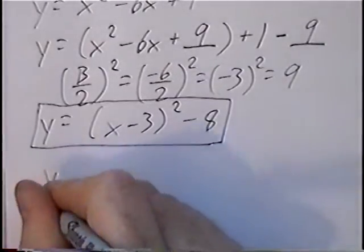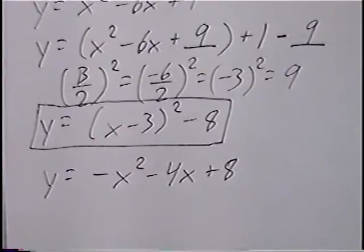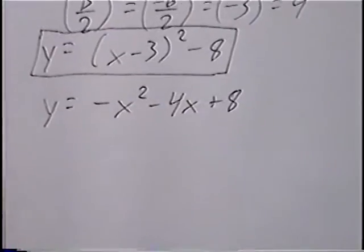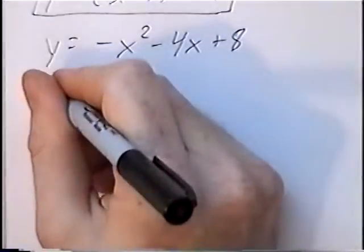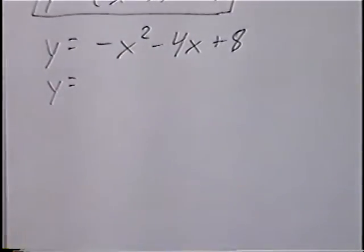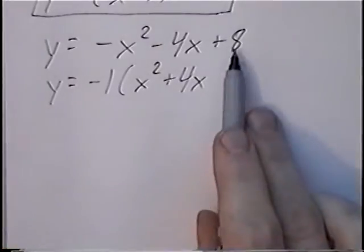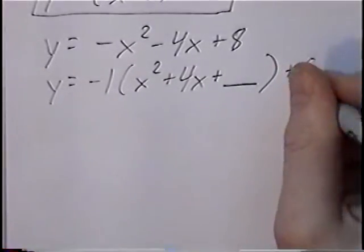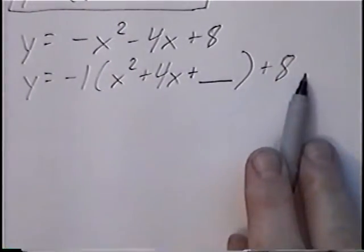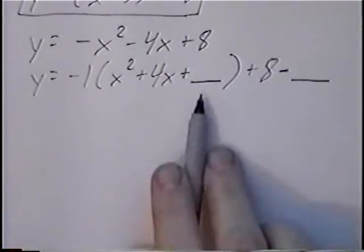The second and last equation for the section is y equals negative x squared minus 4x plus 8. We'll rewrite this in vertex form. When completing the square, the a-value must equal 1. Right now it's negative 1, so we factor out negative 1 first. Factoring negative 1 gives us x squared; factoring negative 1 from negative 4x gives positive 4x. The plus 8 stays outside. We'll add the missing completing-the-square number inside and subtract it outside.